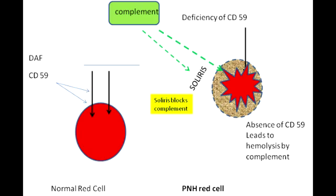What is the triad seen with paroxysmal nocturnal hemoglobinuria? The triad is hemolytic anemia, pancytopenia, and venous thrombosis. The lab findings in PNH include the absence of CD55 and CD59 on flow cytometry.